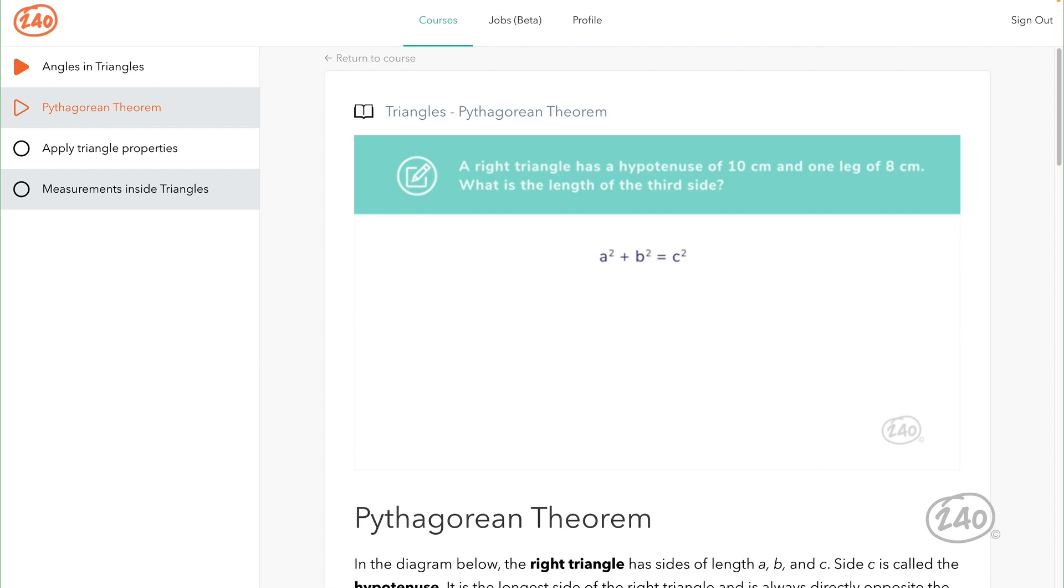A right triangle has a hypotenuse of 10 centimeters and one leg of 8 centimeters. What is the length of the third side? First, write the equation and fill in the known information. We were given the hypotenuse, 10, and one leg, 8. So, we have 8 squared plus B squared equals 10 squared. We will be solving for B, the missing leg. Simplify. Square the known values and combine like terms, which gives us B squared equals 36. Isolate by taking the square root of both sides, leaving us with B equals 6. So, the length of the missing side is 6 centimeters.